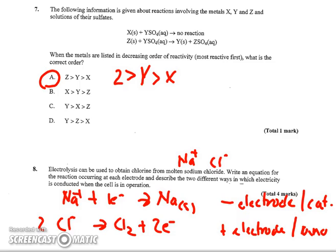And then it wants you to describe two different ways in which electricity is conducted when the cell is in operation. One is through the wire. It goes externally through the wire. Your power source is pushing it through the wire. And the second is the ions in the electrolyte or in the solution.